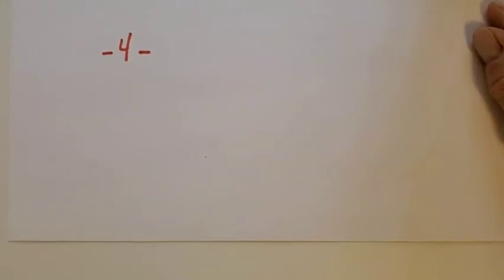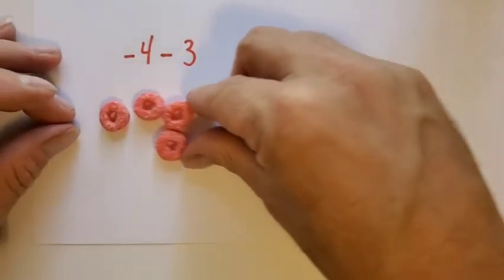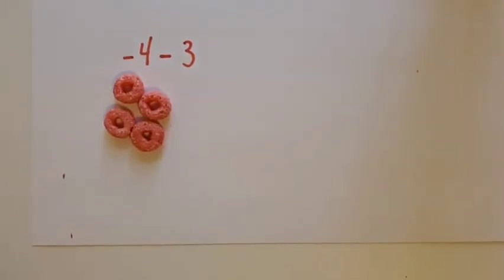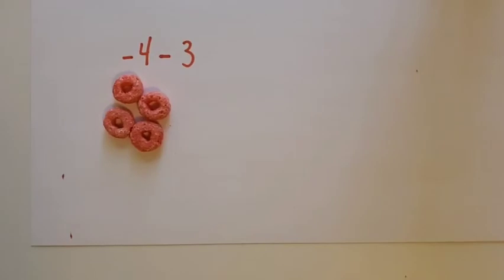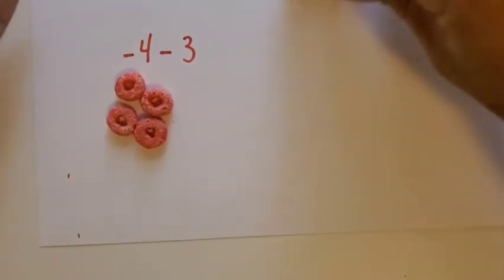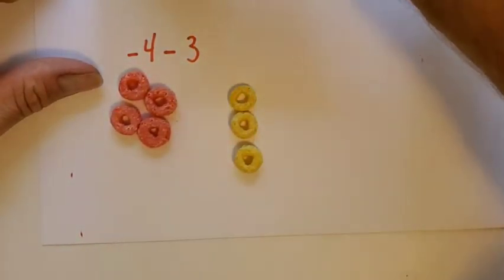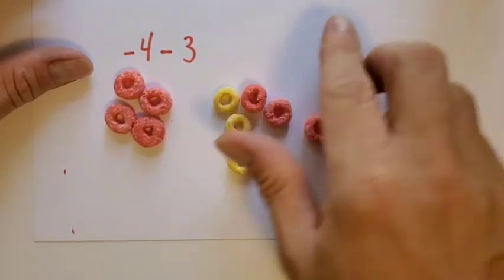Let's do another one. We're going to go with negative 4 minus 3. Take a look at this. Ask yourself, can this truly be done? This problem is telling us we've got 4 reds, and from these 4 reds we need to take away 3 yellows. We don't have them. So we need to bring in enough neutral pairs to allow us to remove the 3 yellows. And I did this.